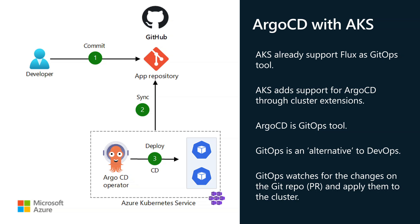These GitOps tools are considered as alternatives to traditional DevOps and they simplify the way you deploy applications. With GitOps, the tool watches for changes on the Git repository. Typically, project teams or application teams will create a new PR to be included in a new version of their application running in Kubernetes. The GitOps tool will detect that change and run a deployment or reconciliation operation so that changes from the repository are reflected into the Kubernetes cluster. The repository becomes the source of truth.